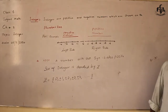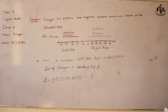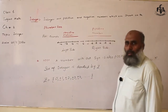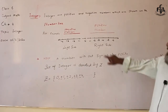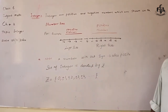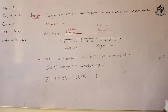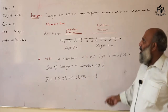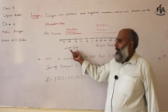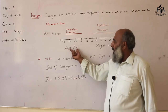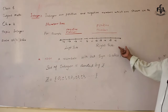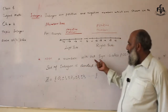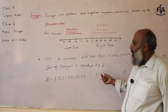Today is the second lesson, chapter number two. Topic: Integer. What is an integer? Integers are positive and negative numbers which are shown on the number line. Integers contain two types of numbers: positive numbers and negative numbers. The left side has negative numbers, and the right side has positive numbers. Note: a number without a sign is also a positive number.